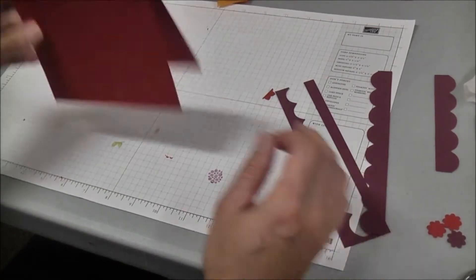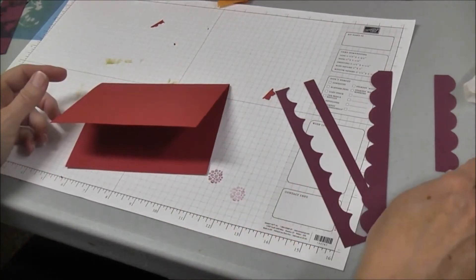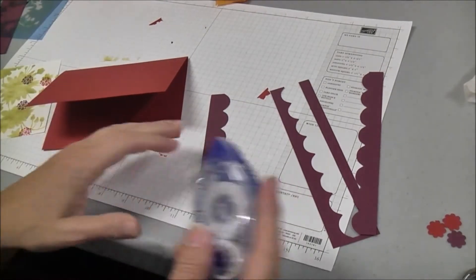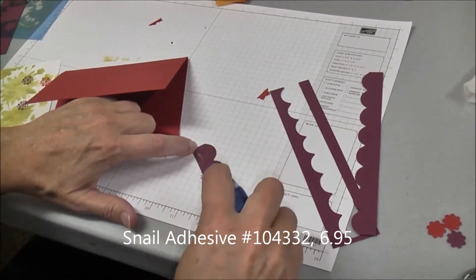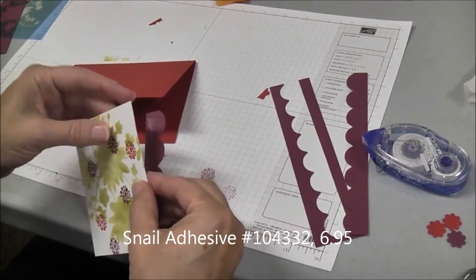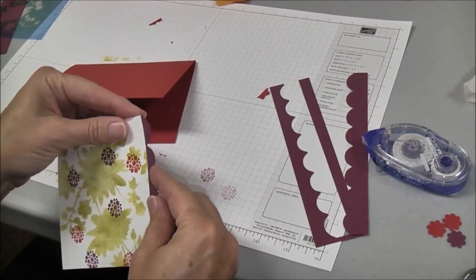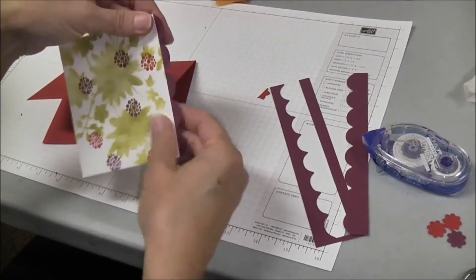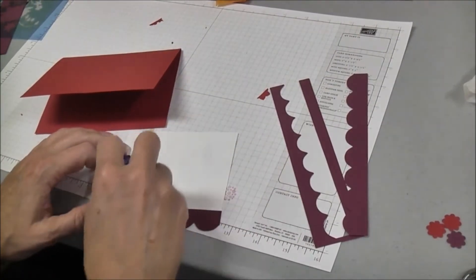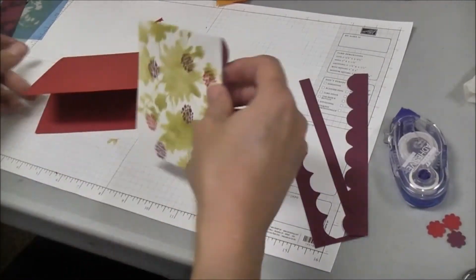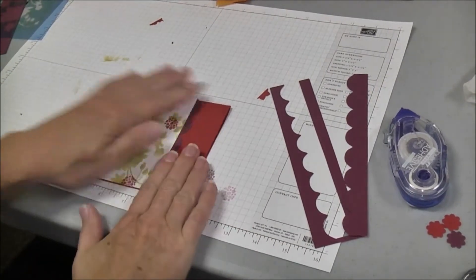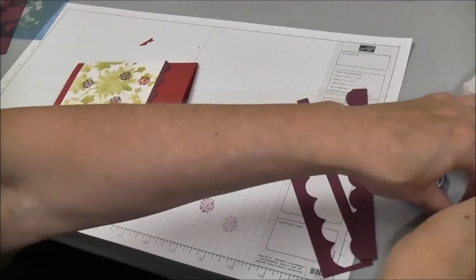We're going to take our red scored card and then our white piece that we've decorated, and we're going to add the Rich Razzleberry trim piece underneath the white with just a little bit of adhesive so that we have the humps sticking out. Then we're going to put some adhesive on the back of this to add it on the front of the card off one edge. Next we're going to add our three little flowers that we punched out with some mini glue dots.